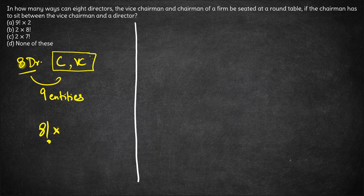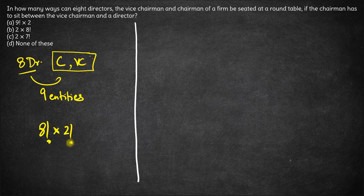In 8 factorial ways you can seat the 8 directors and this group of chairman and vice chairman. Now, in how many ways can you form this group of chairman and vice chairman? It is 2 factorial, which equals 2. So the total number of ways is 8 factorial into 2. This is the answer — option B. This is one way of doing this question.